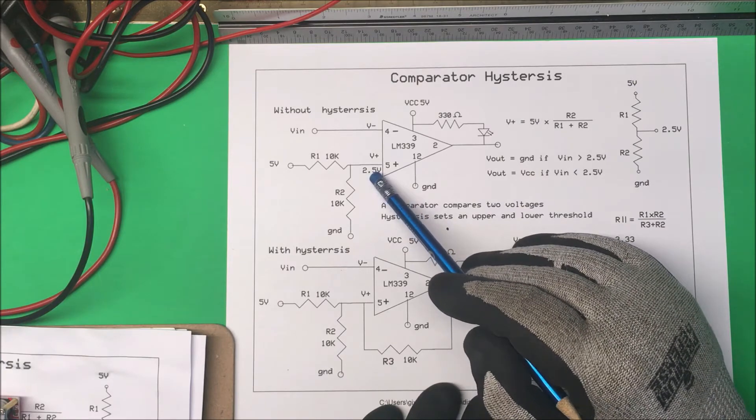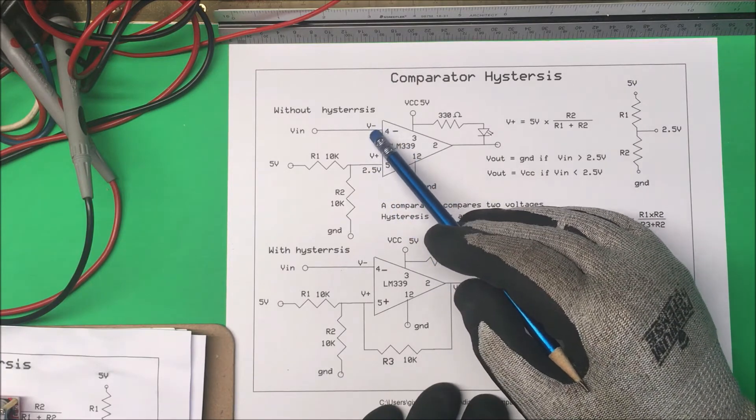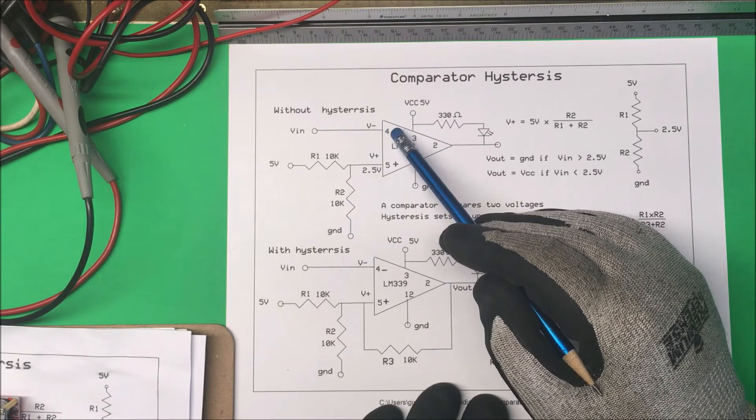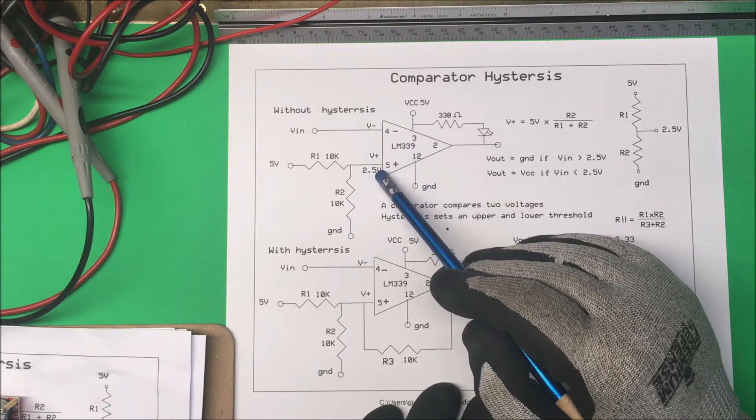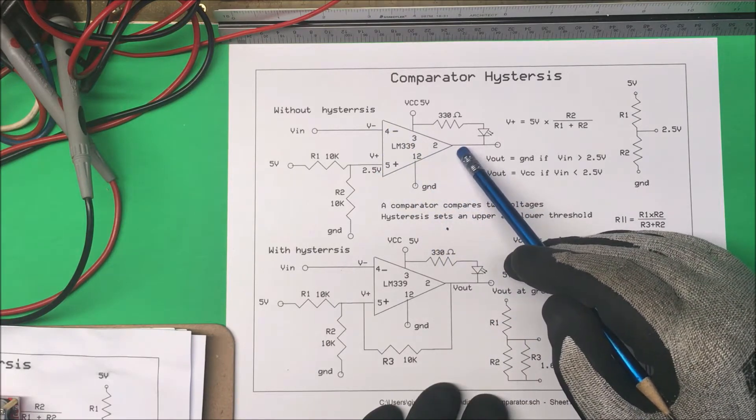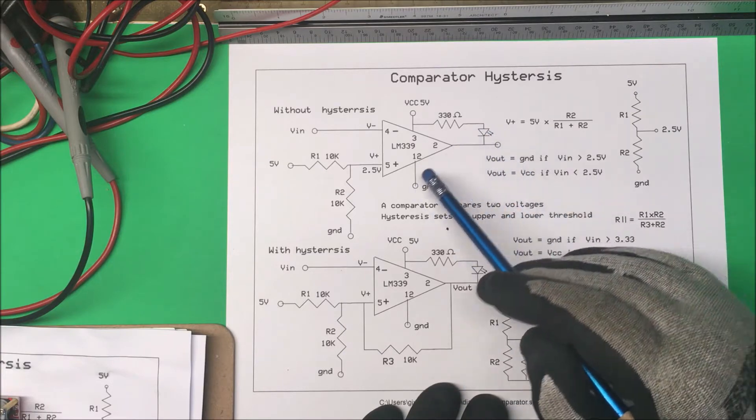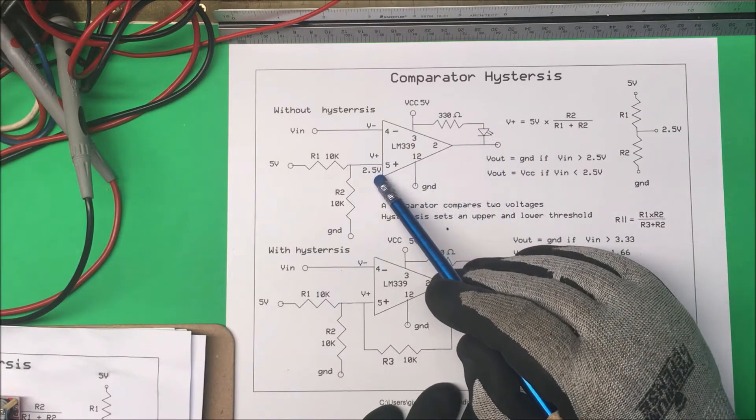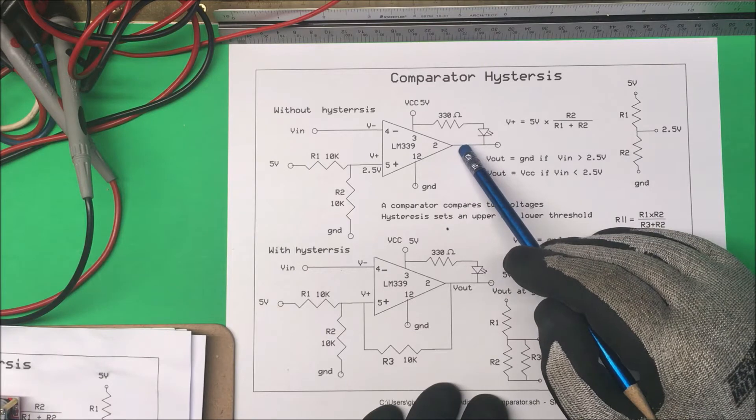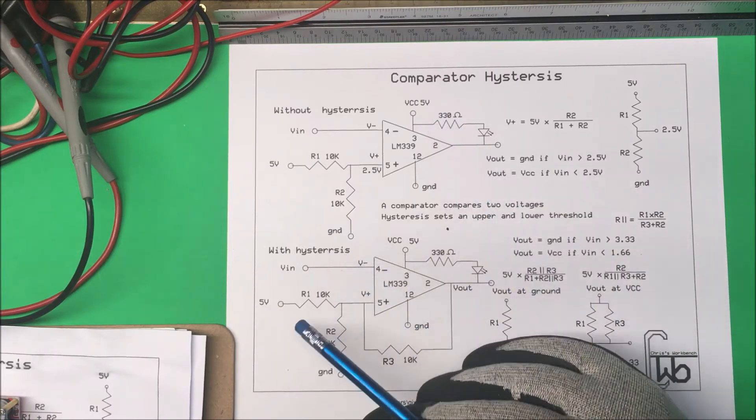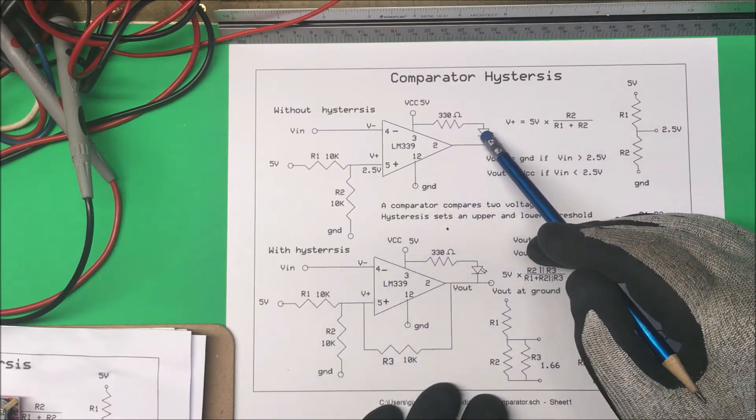So this is going to be our reference voltage. Now if the voltage coming in to the pin here, the negative pin, is greater than 2.5 volts, pin 2 is going to go to ground. And if it's less than 2.5 volts, pin 2 here is going to go to the rail here, going to be 5 volts.